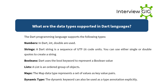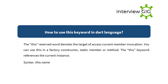What are the data types supported in Dart? Dart supports: Numbers (int, double); Strings — a Dart string is a sequence of UTF-16 code units, using either single or double quotes; Booleans — using the bool keyword; Lists — an ordered group of objects; Maps — key-value pairs; and the dynamic type, which can be used as a type annotation explicitly.